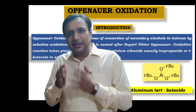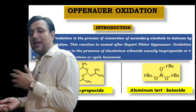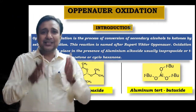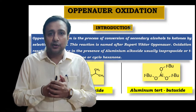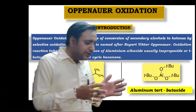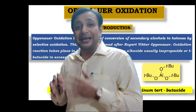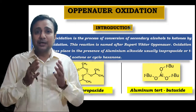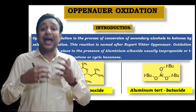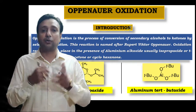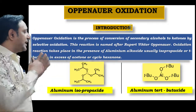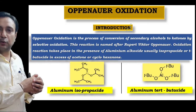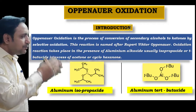Oppenauer oxidation is the conversion of secondary alcohol to ketone by selective oxidation. The reaction is named after scientist Rupert Victor Oppenauer. This oxidation reaction generally occurs in the presence of an aluminium alkoxide — usually aluminium isopropoxide or aluminium tertiary butoxide — in excess of acetone or hexanone. The structures of these two catalysts are shown on your screen: this is the structure of aluminium isopropoxide, and that is the structure of aluminium tertiary butoxide.